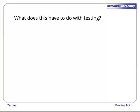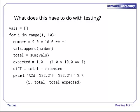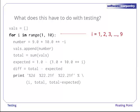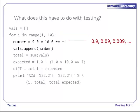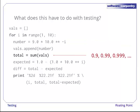What does this have to do with testing? Well, let's have a look at a little program. The loop runs over the integers from 1 to 9 inclusive. Using those values, we create the numbers 0.9, 0.09, 0.009, and so on, and put them in the list of values. Remember, the double star means raised to the power in Python. We then calculate the sum of those numbers. Clearly, this should be 0.9, 0.99, 0.999, and so on. But is it?